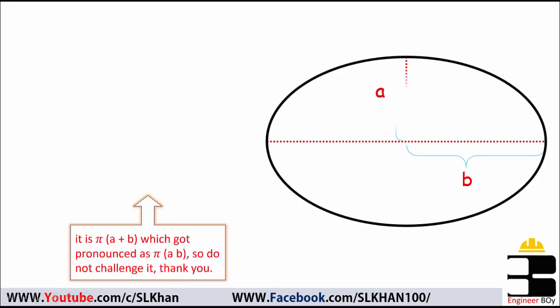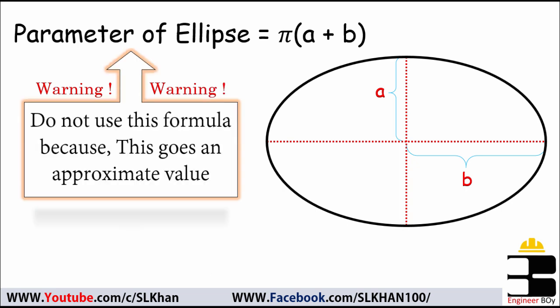Many people use π times a times b in order to determine the length or perimeter of an ellipse, but π times a plus b gives an approximate value of this approach.